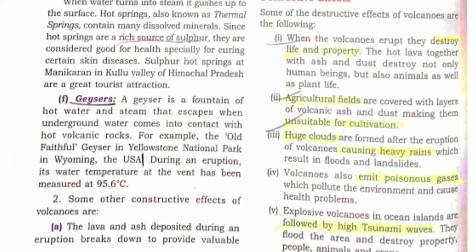Next come the destructive effects. First of all, volcanoes destroy life and property. Agricultural fields are covered with volcanic ash, which makes them unsuitable for cultivation. Huge clouds cause heavy rains, resulting in floods and landslides. Volcanoes also emit poisonous gases, which pollute the environment. Explosive volcanoes on ocean islands can be followed by high tsunami waves, which we will read about in the earthquake chapter in detail.